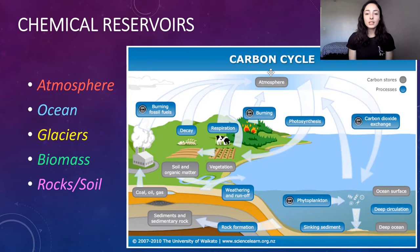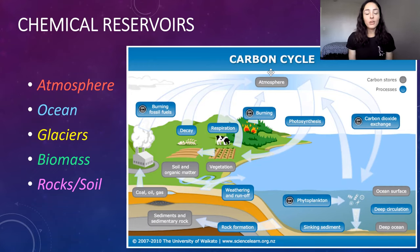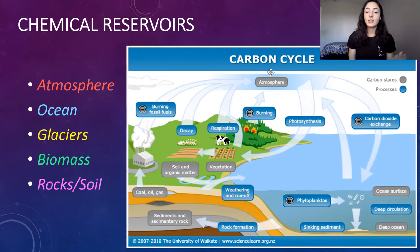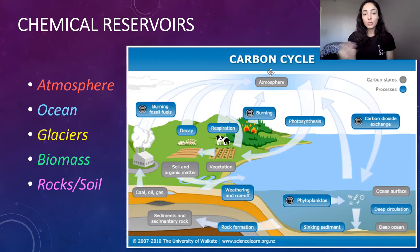All of the blue boxes are processes. The chemical reservoirs are basically exactly what they sound like — they're like boxes that hold the chemicals. For example, carbon dioxide is the chemical and the atmosphere is the reservoir for that chemical. Additionally, the ocean, glaciers, biomass, and rocks and soil can also act as chemical reservoirs. Processes like respiration, release of carbon dioxide, or photosynthesis taking up carbon dioxide move the carbon from reservoir to reservoir.